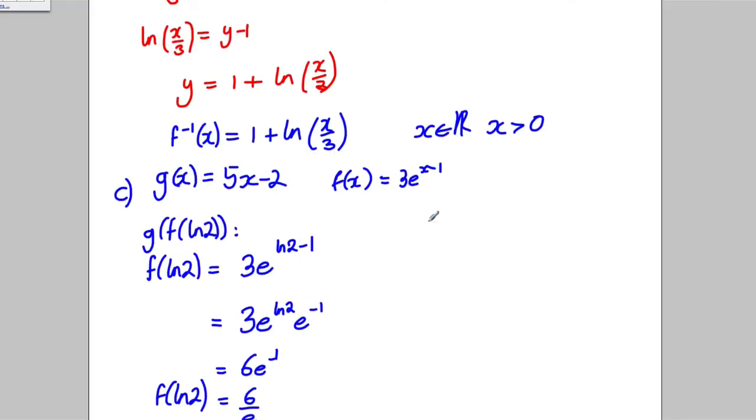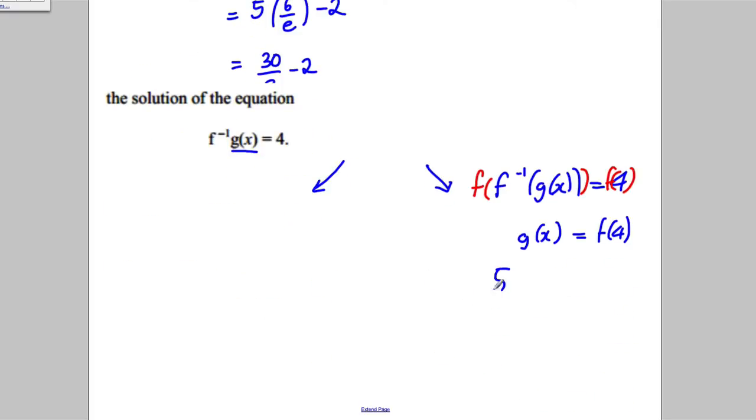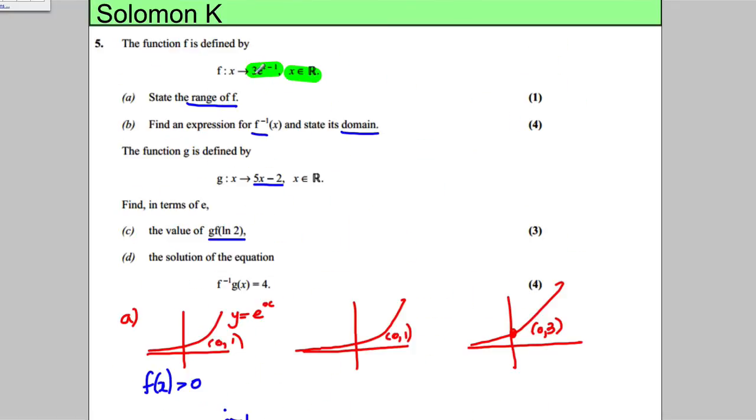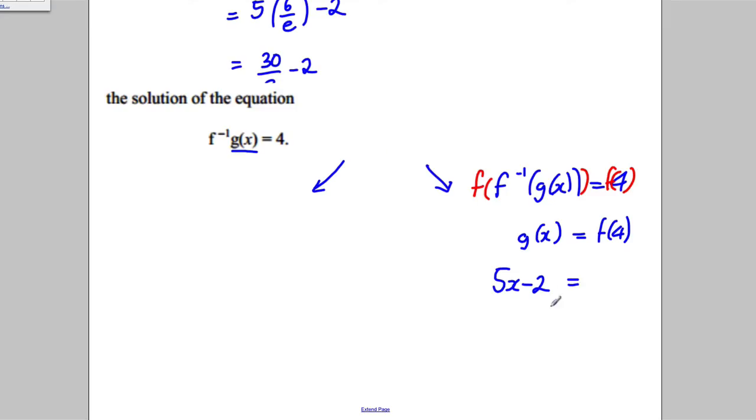Now g(x) is 5x-2, so 5x-2. And f(4), well, we put 4 into this, it would be 3e^3. So 3e^3, add 2 to both sides and divide by 5. x would be equal to (3e^3 + 2)/5. I think that's very simple.